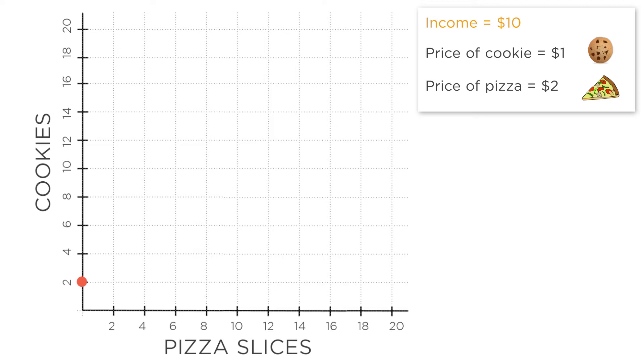What happens if you spend all your money on pizza at $2 per slice? If you have $10, that means that you can buy five slices and we'll have nothing left over to buy cookies. That puts you at this point here, five slices and zero cookies.